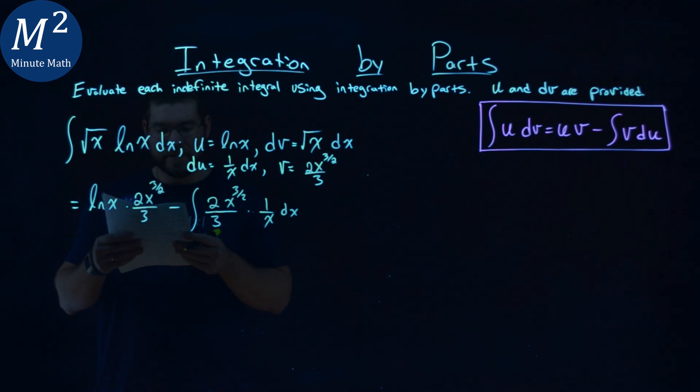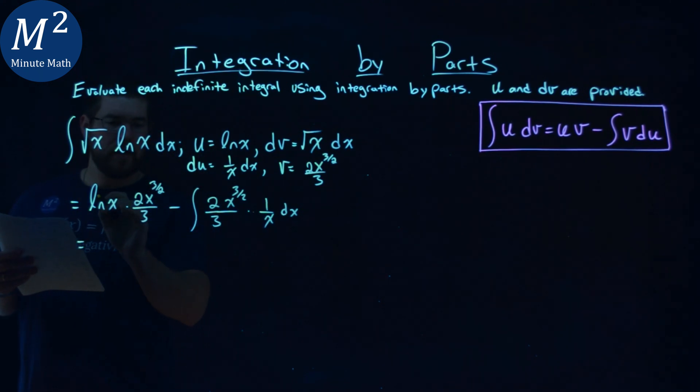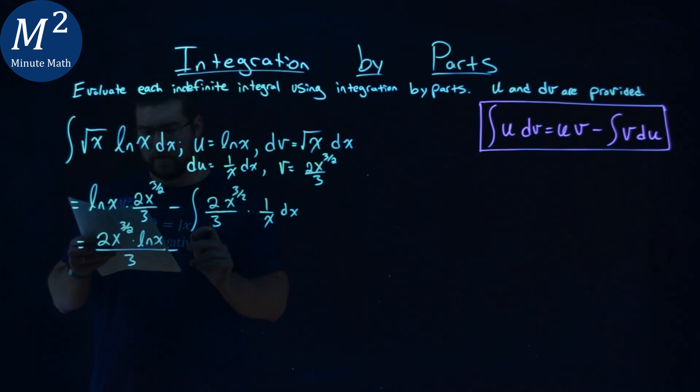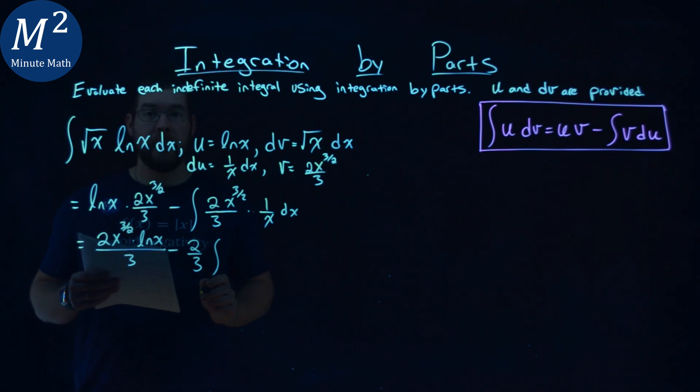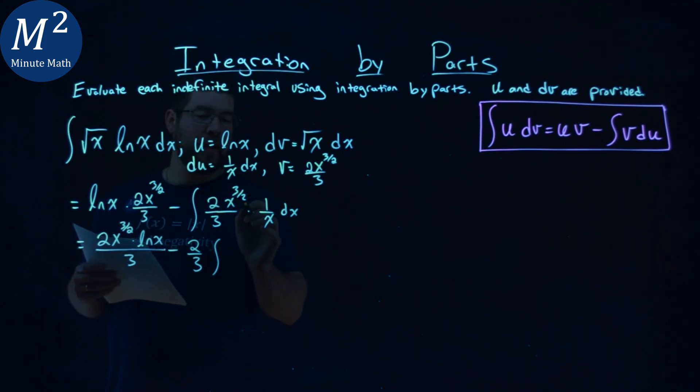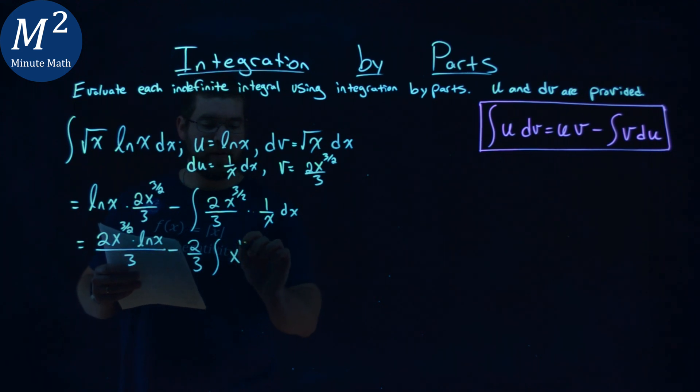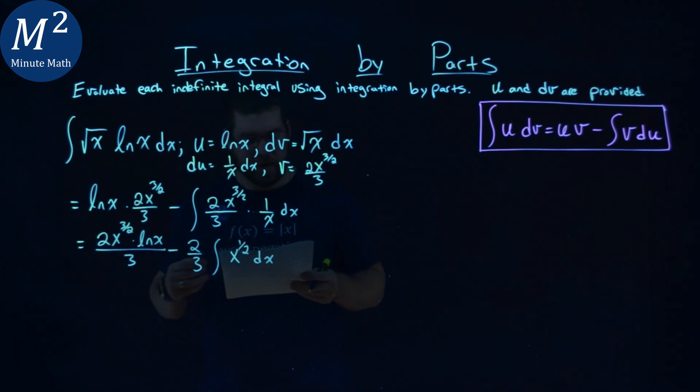So, from here, let's see if we can simplify things out and pull out what we can. Now, right here, let's combine it as one fraction. We have 2 x to the 3 half power times natural log of x over 3, minus. Now, here, where it gets a little tricky, I'm going to pull out the 2 thirds, and let's simplify the inside. We have x to the 3 half power divided by x, so we really have x to the 1 half power dx, right there.